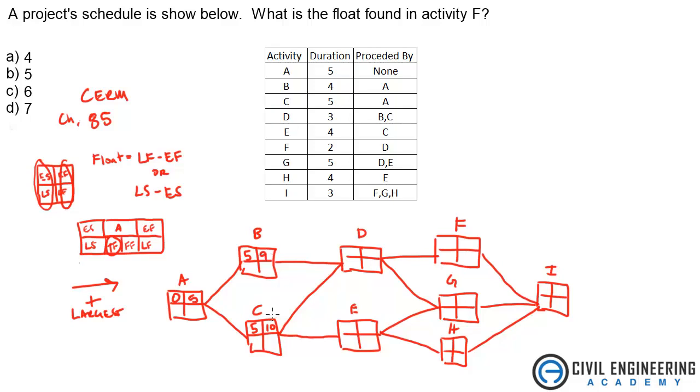So at activity D you need to take the larger of these two values which is going to be ten. So ten's gonna go here and it's also going to go here. So D is three days, you just add that to ten, that's thirteen. E is four days, so this is fourteen. Again you take the larger of the two values, so this is going to be fourteen here at H, this is going to be fourteen here, and because D is only connected to F this is just thirteen here.